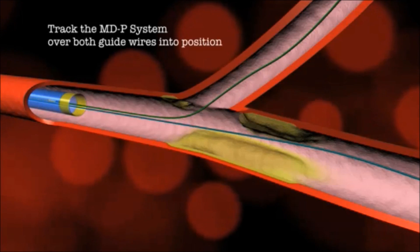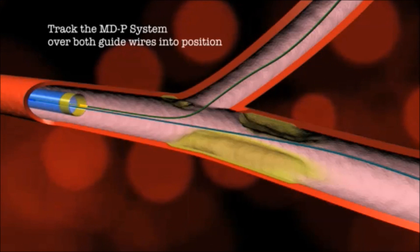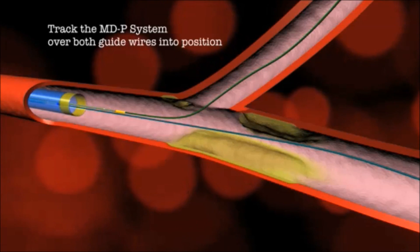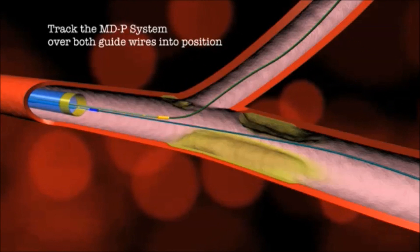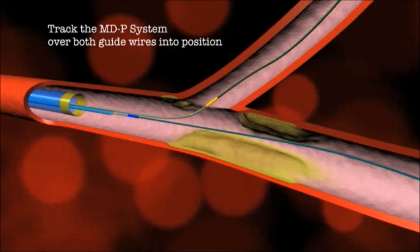The system is advanced over the monorail daughter catheter. Through the over-the-wire lumen of the mother catheter, the second vessel is wired before entering the coronary.